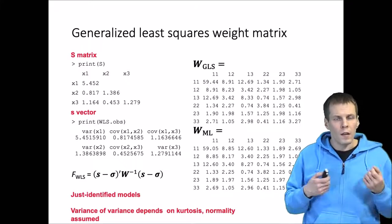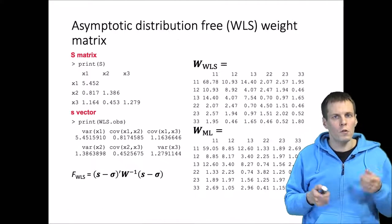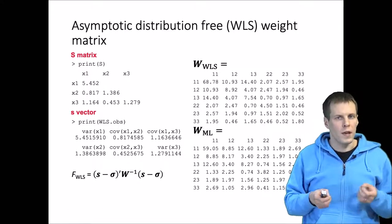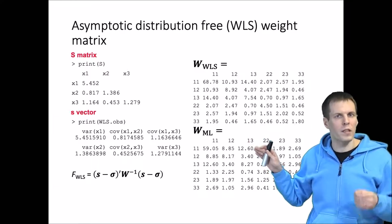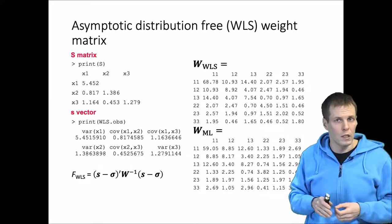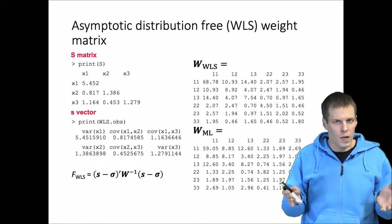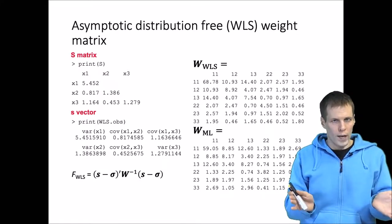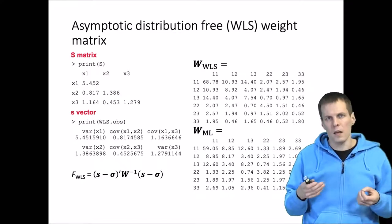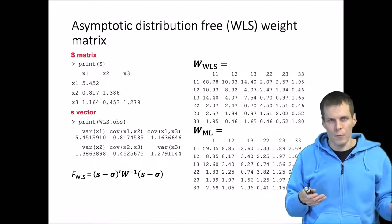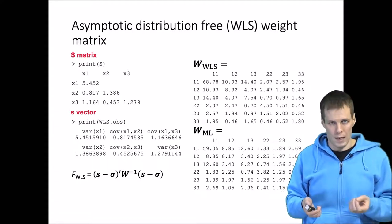Another alternative is to not use correlation matrices but to estimate the weight matrix from the raw data, taking kurtosis into account. This produces the asymptotic distribution-free weight matrix. This used to be called the ADF estimator but is now more commonly called the WLS estimator.